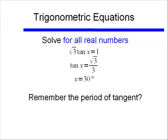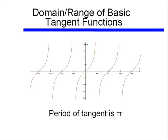But we need to remember the period of tangent, unlike sine and cosine, was not equal to 2 pi. Let's go back to a graph of tangent. Remember the period of tangent, that is the time it takes to repeat a complete cycle, is just pi.